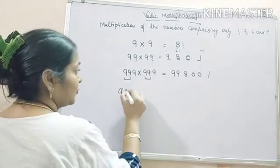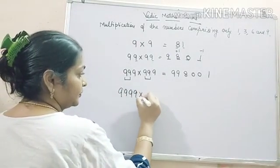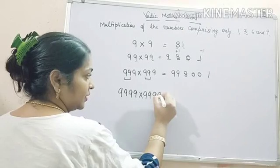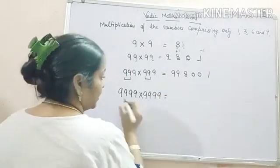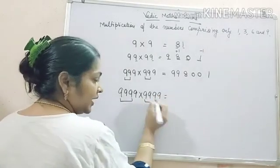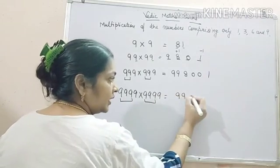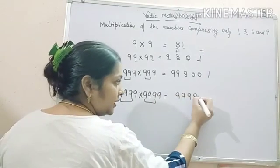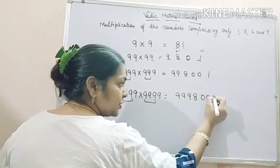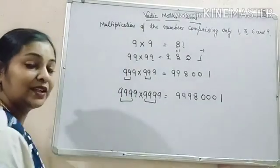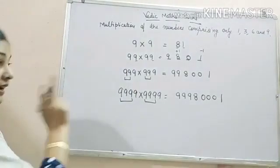Suppose there are 4 nines. These 3 nines are extra? 999, put 8, 000, 1. So easy it is.